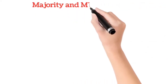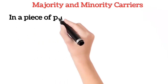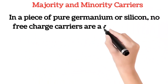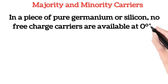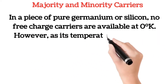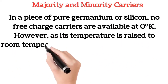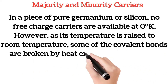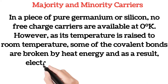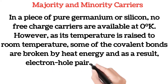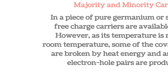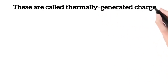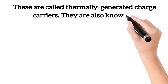In a piece of pure germanium or silicon, no free charge carriers are available at zero kelvins. However, as its temperature is raised to room temperature, some of the covalent bonds are broken by heat energy and, as a result, electron-hole pairs are produced. These are called thermally generated charge carriers, also known as intrinsically available charge carriers.